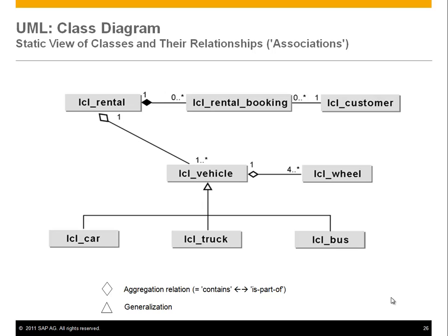This is a little more complicated but also important. We see a whole bunch of classes and how they connect together — there's a rental, rental cars, vehicles, rental companies, a booking, a customer-to-rental connection, and vehicles with wheels. This also alludes to the different types of relationships. You see numbers like zero dot dot star on the relationships, which has to do with cardinality and will be described on the next slide.